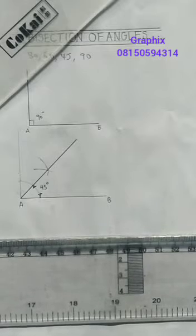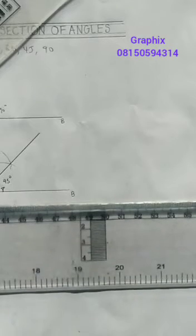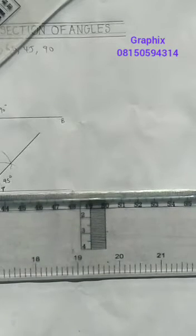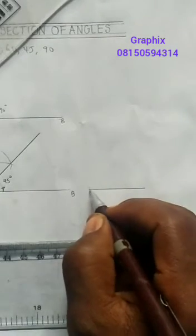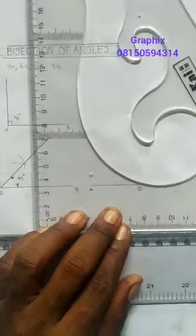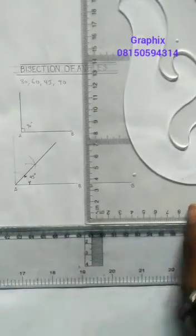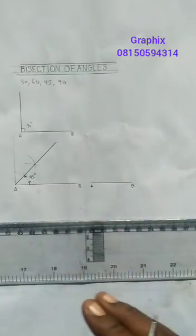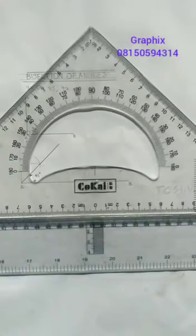I can also use my set square to draw 45 degree. Let me show you that now. When this guy is standing like this, it's 90 degree. But if I use the other guy here, I believe everybody have seen this before. This is your 45 degree set square.